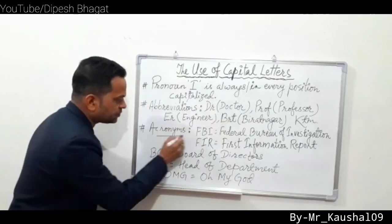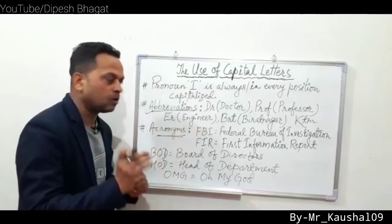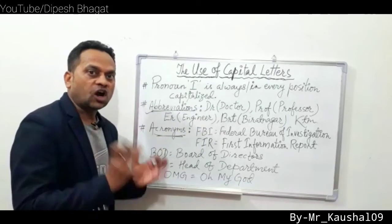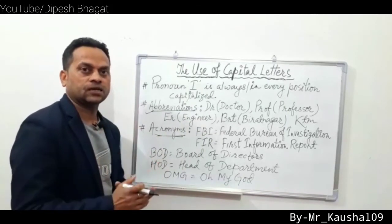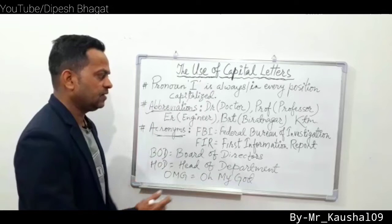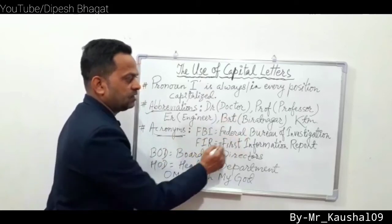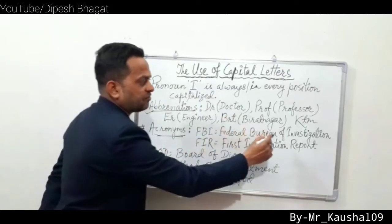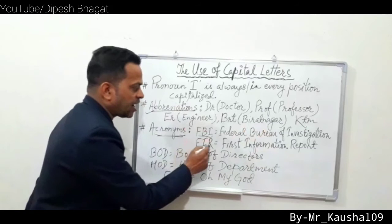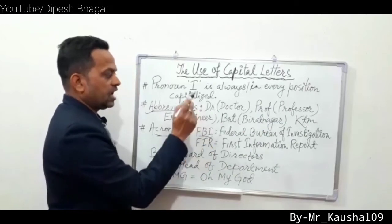There is a slight difference between abbreviations and acronyms. Abbreviations are the shortened forms of a single given word. Acronyms are the short form of a phrase, taking the initial letter of each word. For example, 'Federal Bureau of Investigation' — taking F from Federal, B from Bureau, I from Investigation — gives us 'FBI'.